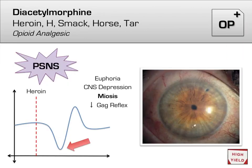The intoxication picture for heroin is straight out of the 'ARMED' mnemonic: analgesia, respiratory depression, miosis, euphoria, drowsiness, and constipation. Miosis, or pinpoint pupils, is a particularly high-yield sign to note, but you should know this whole slide cold.